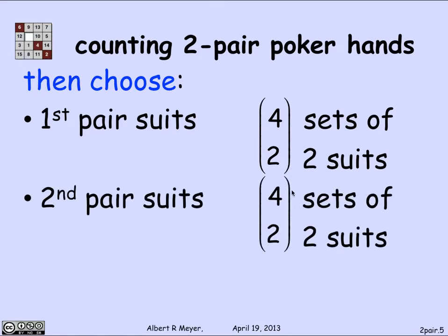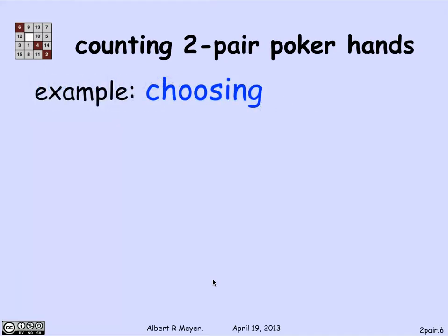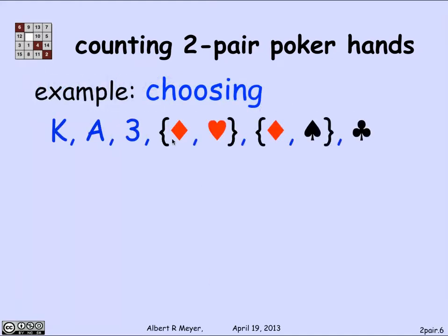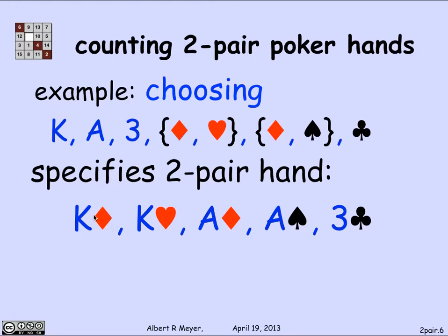Likewise, there are four choose two ways to choose the two suits for the pair of kings. And finally, there are four possible suits to choose for the last card. So, for example, I might specify a two-pair hand by saying: choose a pair of kings first, a pair of aces as the second pair, and a three as the loose card; choose diamonds and hearts for the kings, diamonds and spades for the aces, and a club for the three. This sequence of choices specifies exactly the two-pair hand illustrated: two kings — a diamond and a heart — two aces — a diamond and a spade — and the three of clubs.